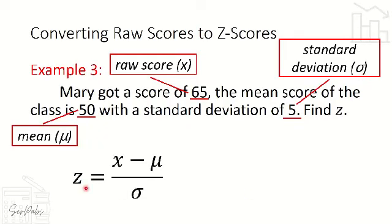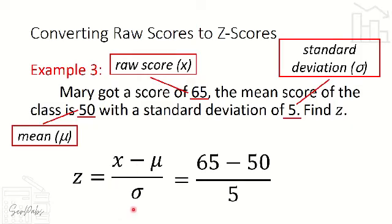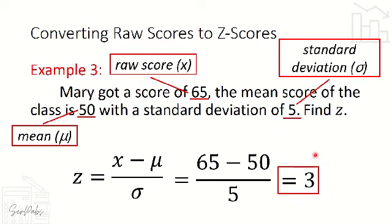Applying the formula Z = (X − mu) / sigma, we substitute each variable: (65 − 50) / 5. Here 65 is our raw score, 50 is our mean, and 5 is our standard deviation. So 65 minus 50 divided by 5 equals 3. The equivalent Z score is 3.